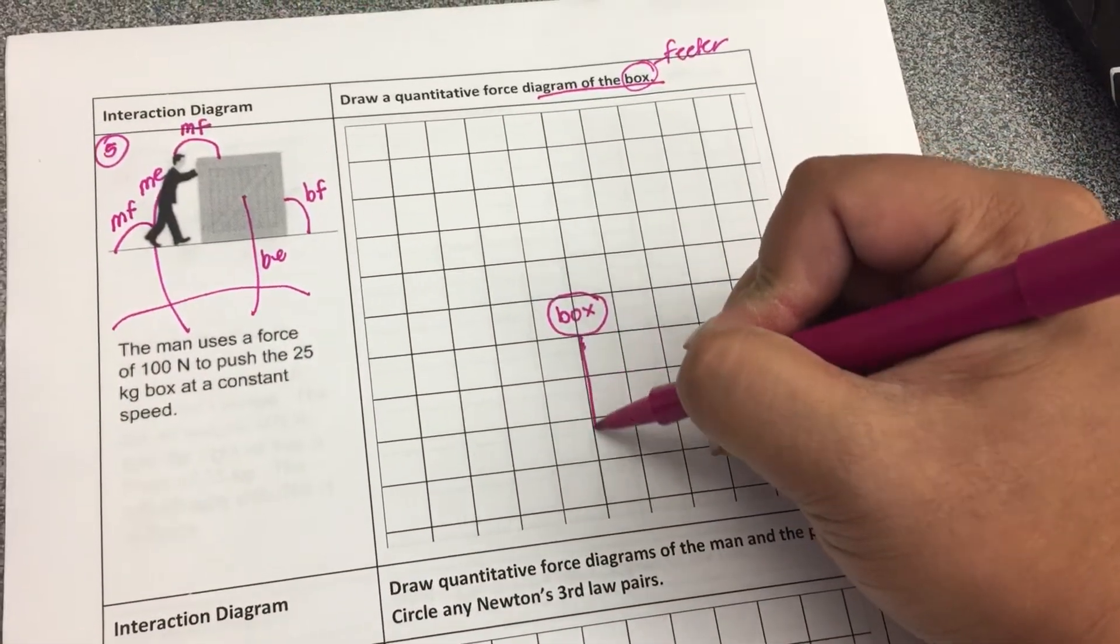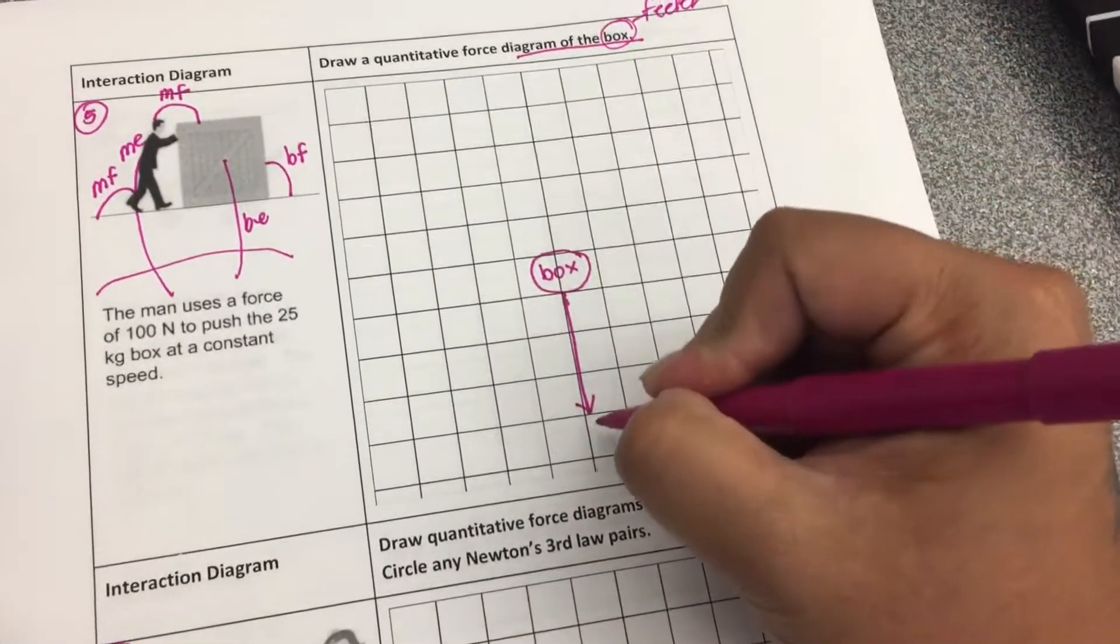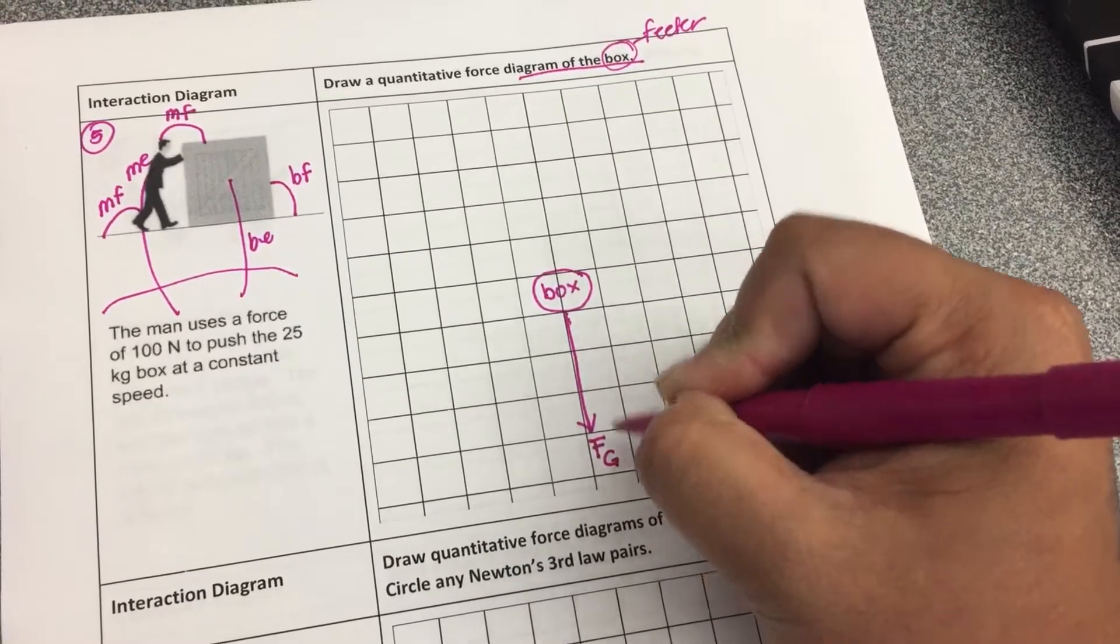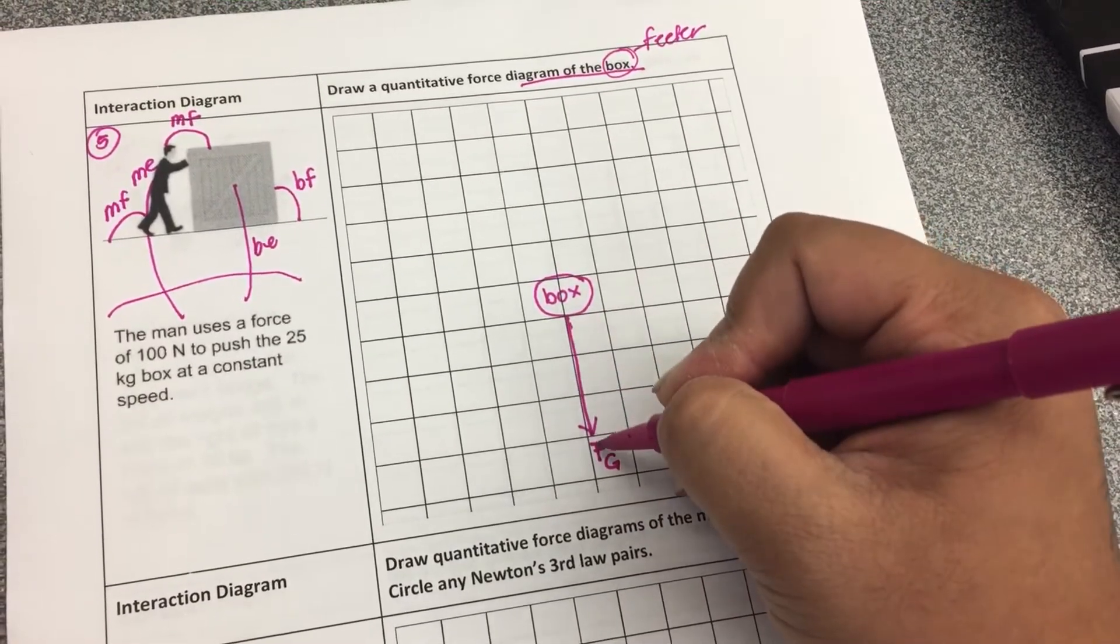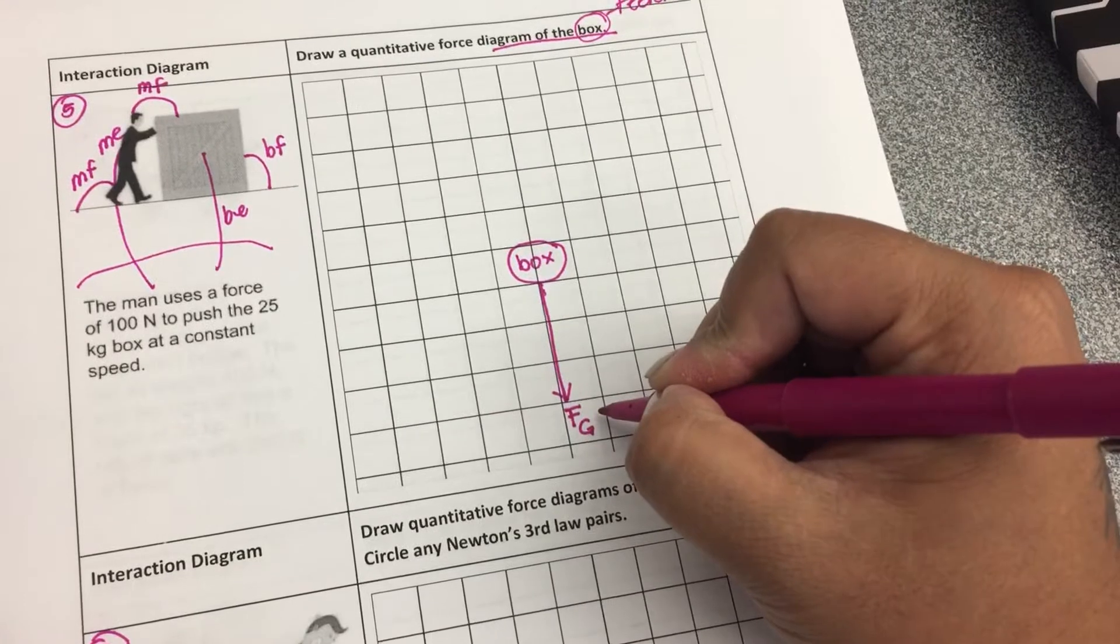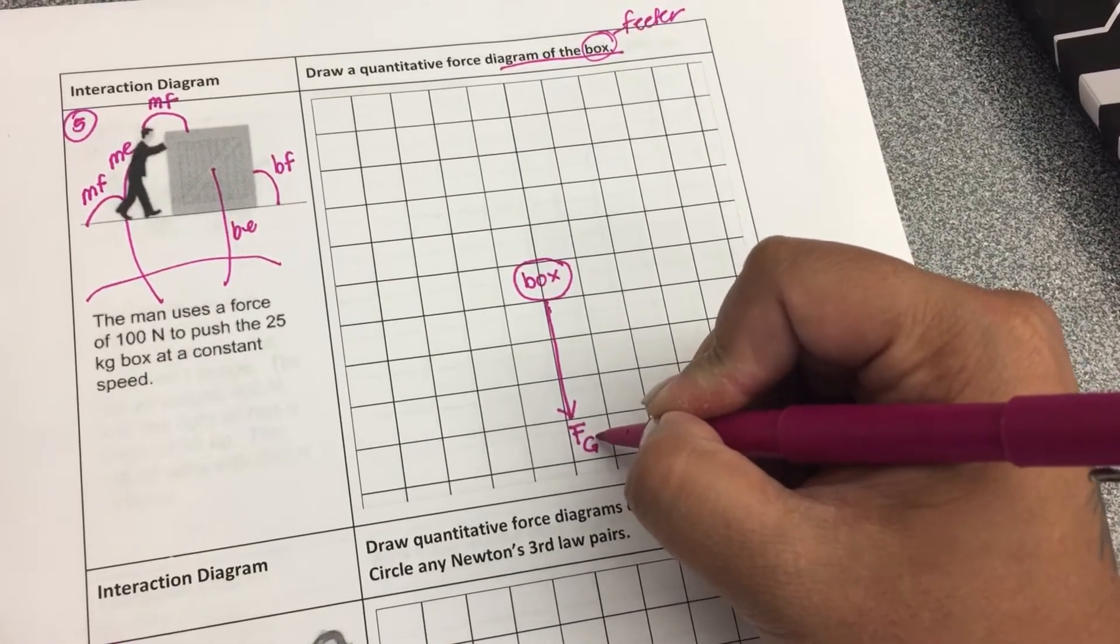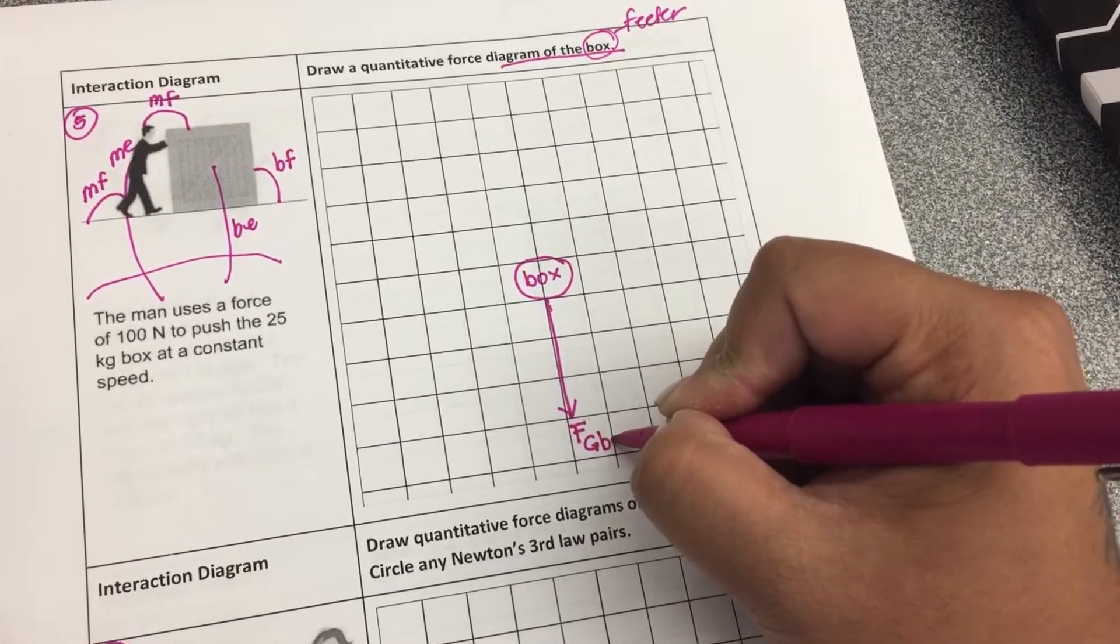So the first one I always like to do is that the force of gravity is pulling the box down. And the force of gravity is acting on the box by the earth.